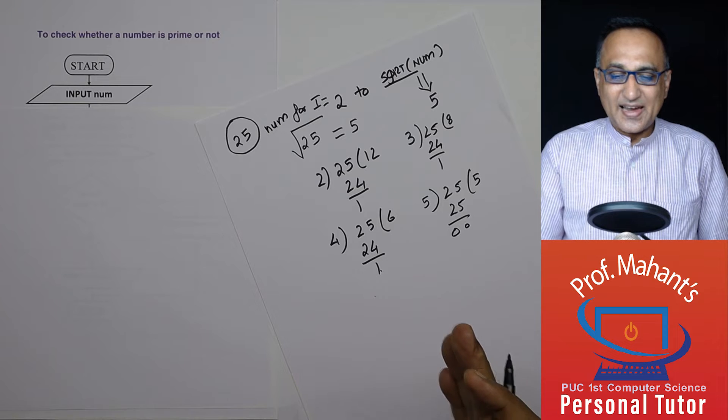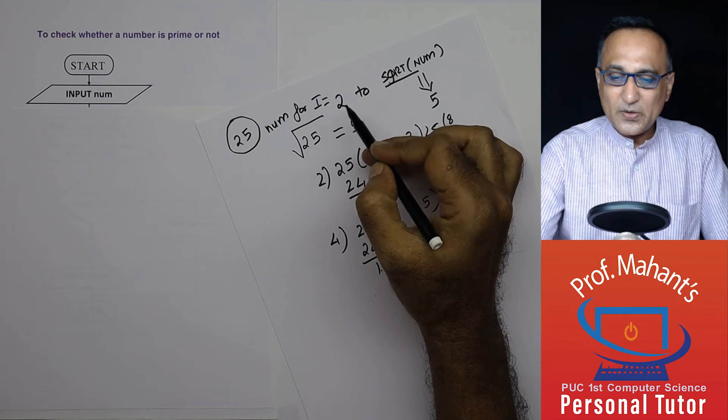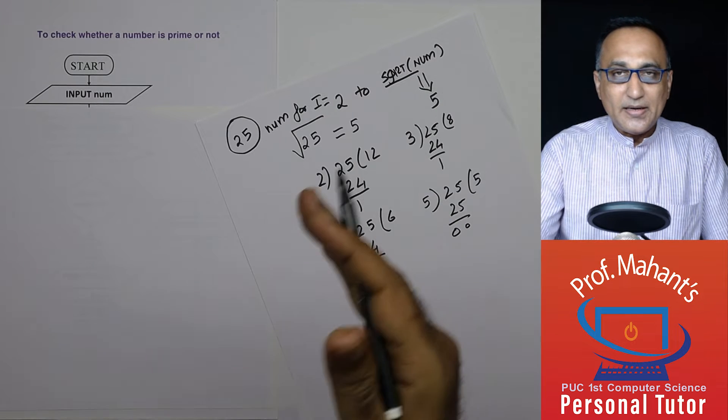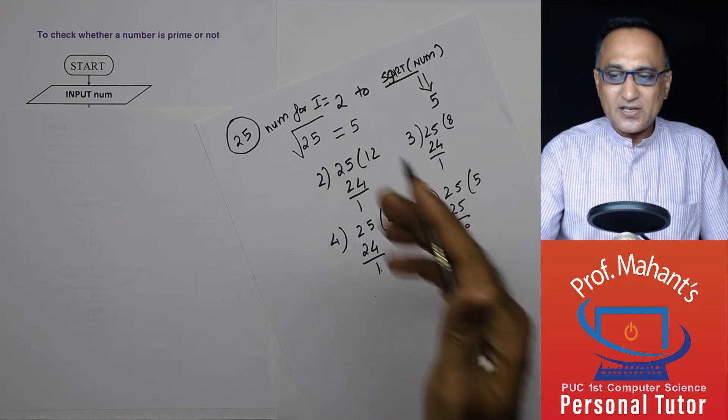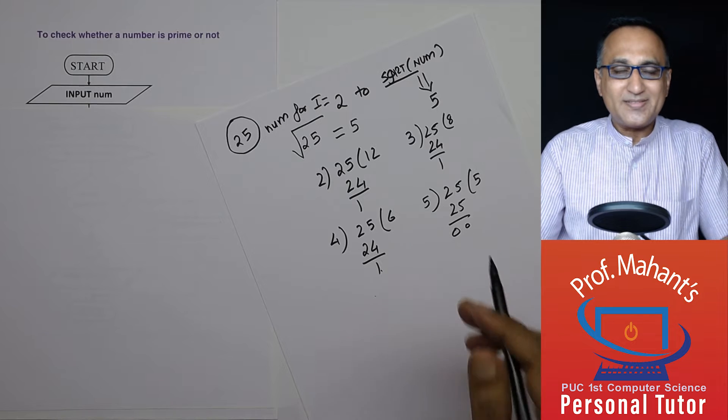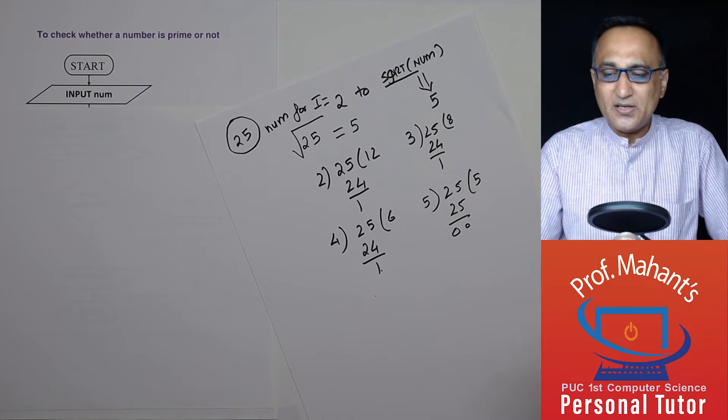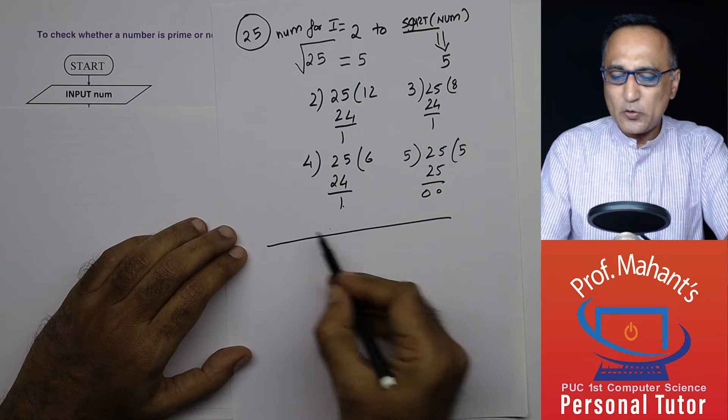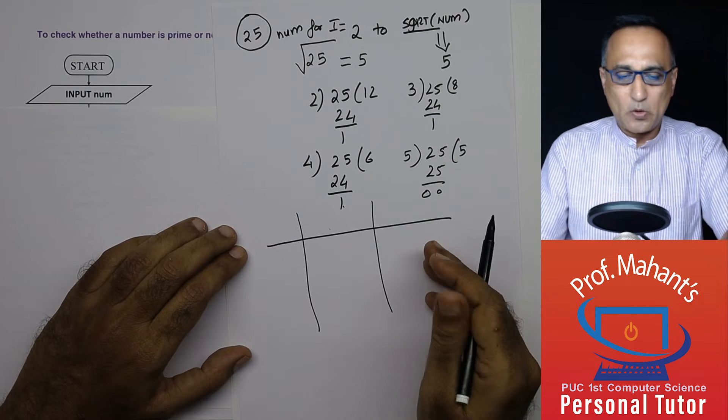The logic is like this. I'll take a number, I'll start dividing it from 2 all the way till square root of that number. In between, after division, if the remainder happens to be 0, then it is not possible for that number to be a prime number. Let's run through the flowchart and then we'll draw a table and try to analyze the particular problem.